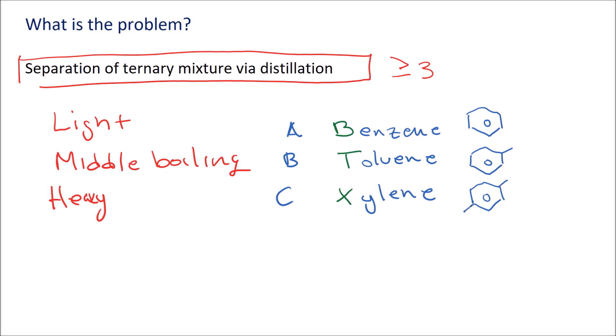There are a few isomers. I'll just draw one of them. Separating these three components, where xylene is really a mixture of the three isomers, is very important industrially.